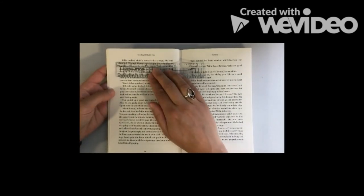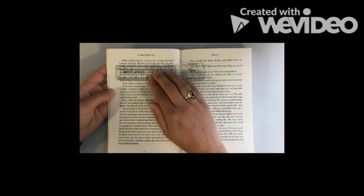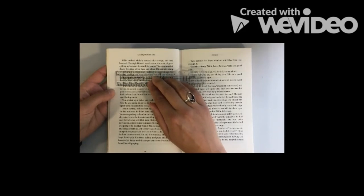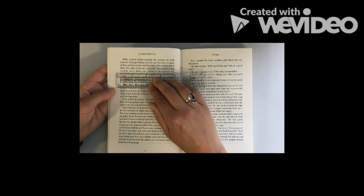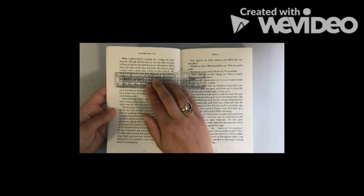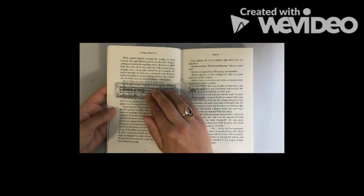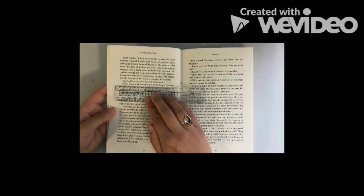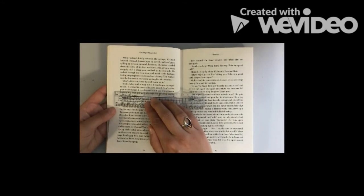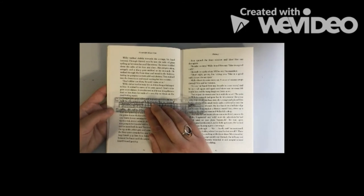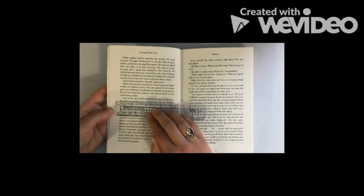Willie walked shakily towards the cottage, his head lowered. Through blurred eyes, he saw the tufts of grass spilling up between the flat stones. The sweat trickled down the sides of his face and chest. His armpits stung savagely and a sharp pain stabbed at his stomach. He walked through the front door and stood in the hallway, feeling the perspiration turn cold and clammy. Tom walked into the front room and stood waiting for him to enter. Don't dither out there, he said. Willie did so, but his body felt as if it no longer belonged to him.